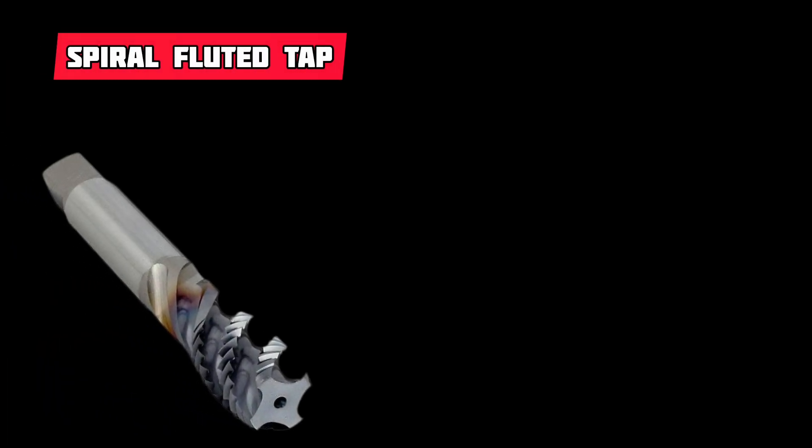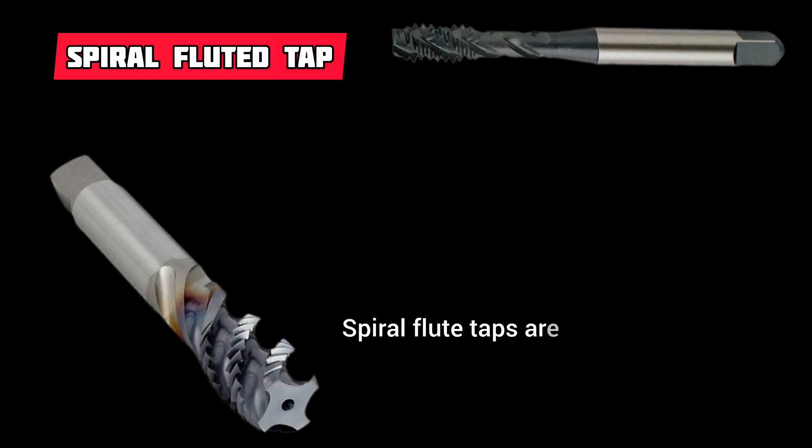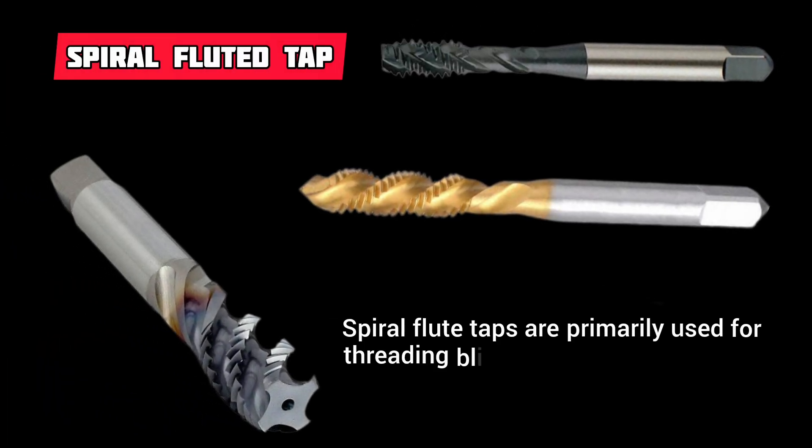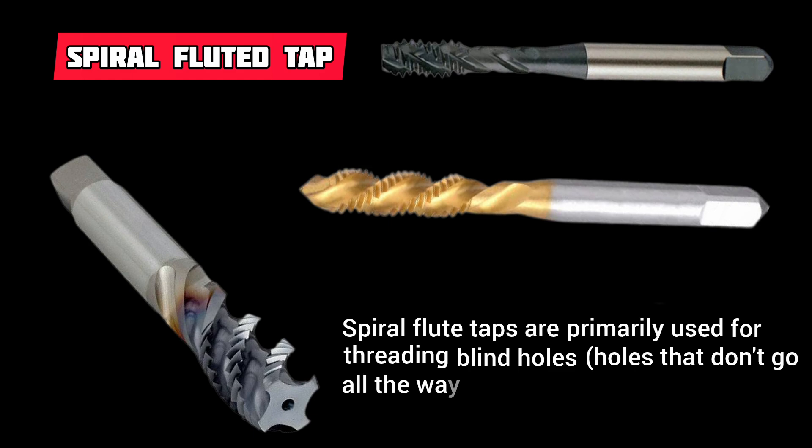Spiral Flute Taps are primarily used for threading blind holes — holes that don't go all the way through a workpiece.